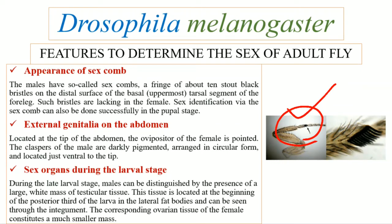Sex organs during the larval stages. During late larval stages, the sex organs within the body of the larvae can be seen. In case of males, there is a white mass of testicular tissue that is present on the posterior third portion of the larvae, along with the lateral fat bodies, and it can be seen through the integument. In case of females, the ovarian tissue constitutes a much smaller mass as compared to the testicular tissue present in the male larvae.